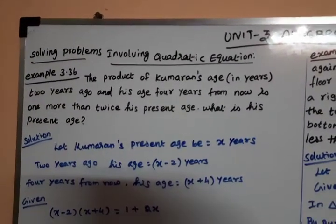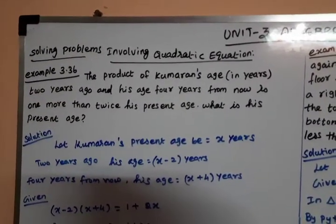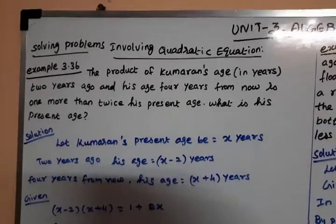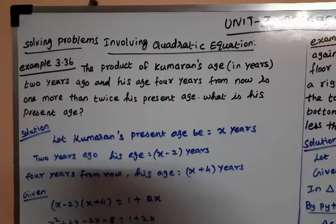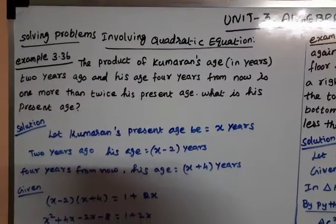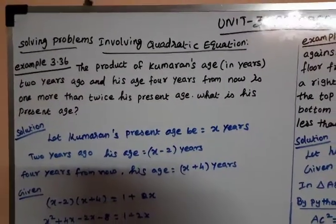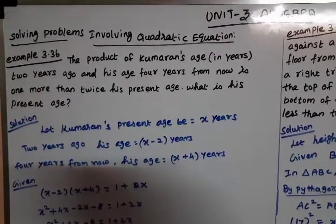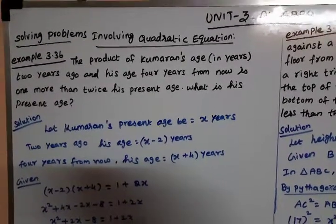So, in the previous classes, in section 3.1, we covered the Factorization Method, the Complete Square Method, and the Formula Method.